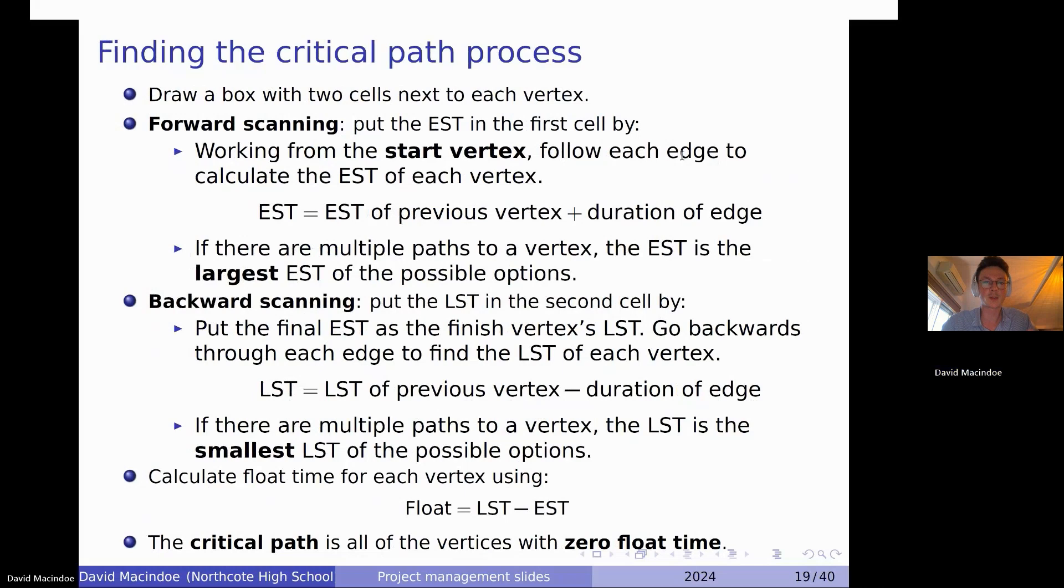So forward scan through the whole network, put in all of the ESTs in the leftmost box. And then what we have to do if we're going to get this critical path is do some backwards scanning. The first step in that is just put in whatever your final EST is for that finished vertex, just put it as the finished vertex latest start time, the LST. Then we're kind of working backwards. So as we go back across each edge, we are subtracting off the previous LST the duration of that edge. And again, you might have these situations where you've got two different paths to a vertex. And then what we want to do is use the smallest LST. So I think this is probably where students might get confused that when we're forward scanning, we're picking the largest option and when we're backward scanning, we're picking the smallest option.